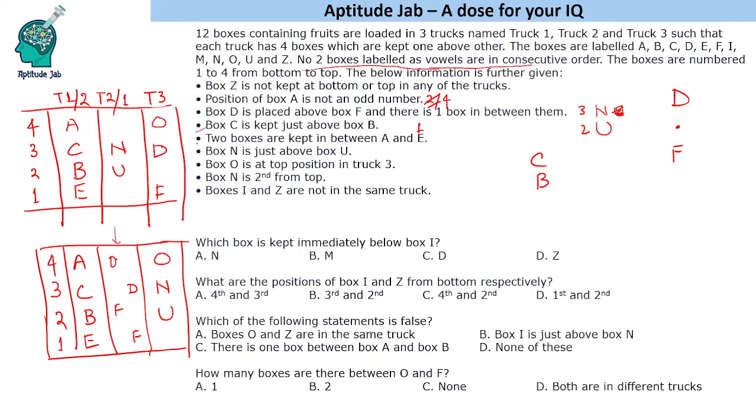O is at the top position that we have done. N is second. NU is done. I and Z are not in the same track. Now we are left with, we have filled nine of these boxes. We have to fill three more boxes which are one is I, one is Z and M. I, Z and M are left to be filled. These three boxes need to be filled in this arrangement. This is given that Z is not kept at the bottom or top in any of the trucks. So Z cannot come here. Z cannot come here. Z will come here. Now I and M are left. So I cannot come with a vowel. So I will be here and this will be M.